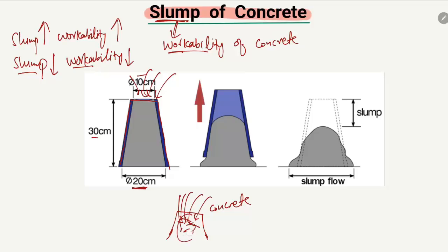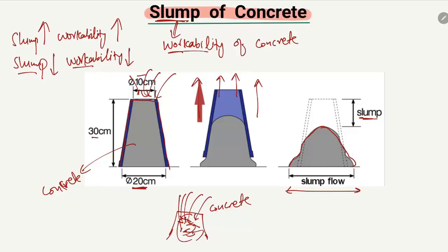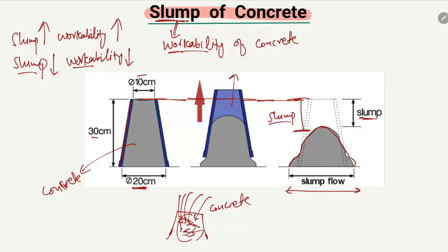After filling the cone with concrete, after about 30 seconds this cone is removed in the upward direction. You see here — the cone has been removed and the concrete behaves like this, spreading on the table. This spreading is known as the slump flow — how much the concrete spreads on the table. The slump itself is the reduction in height from the original concrete height. After removing the cone, the concrete flows down, and this reduction of height is known as the slump.